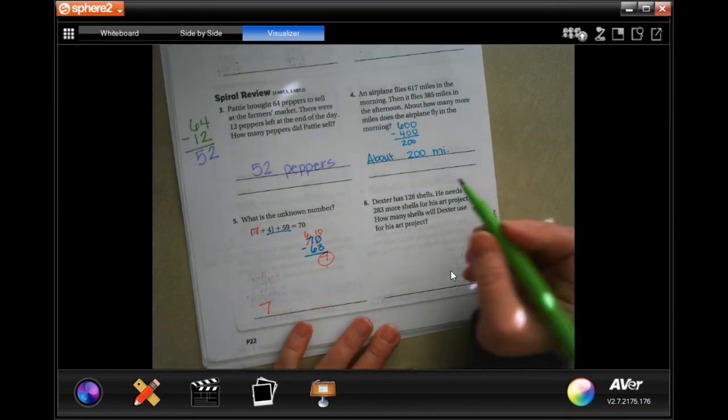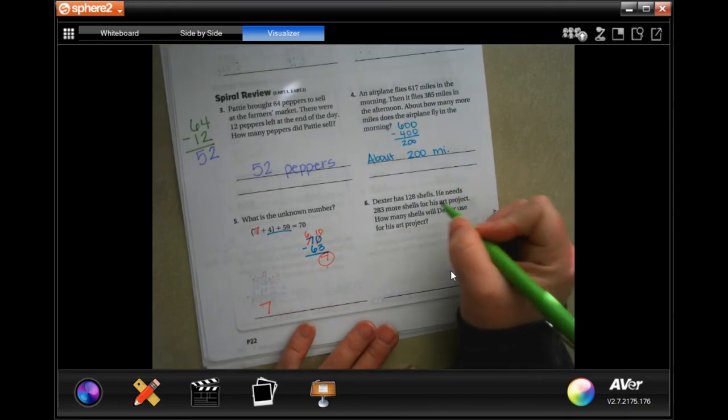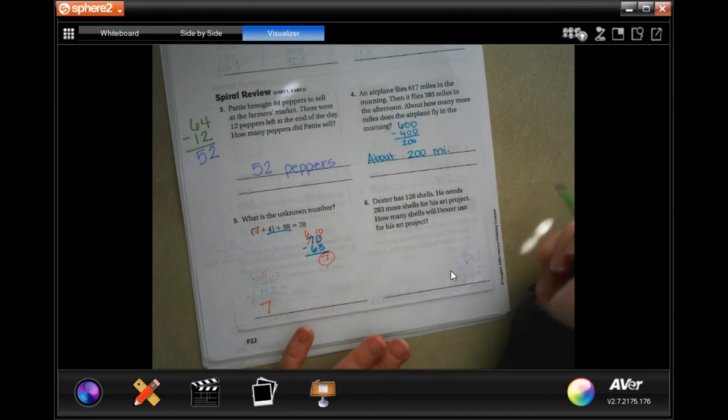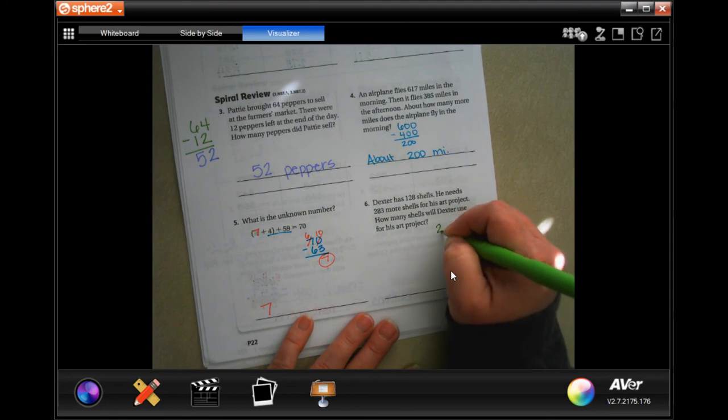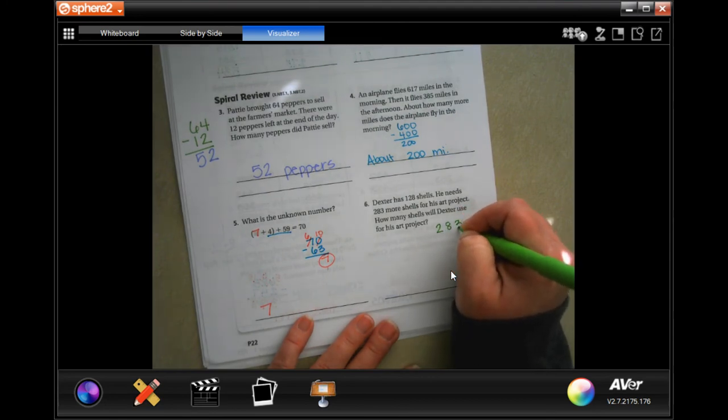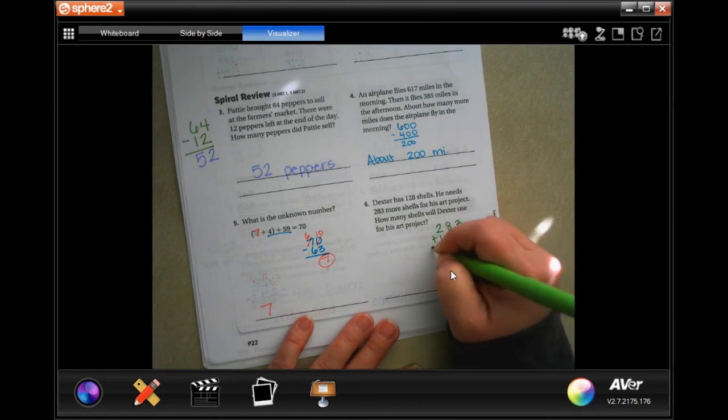Dexter has 128 shells. He needs 283 more shells for his art project. How many shells will he use for his art project? So, I'm going to put that 283. I'm going to put that 128. And I'm going to add them together.